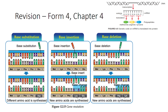There are three types of gene mutation: base substitution, where a base is replaced by another; base insertion, where a base is inserted in between existing bases; and base deletion, where a base is missing and deleted.